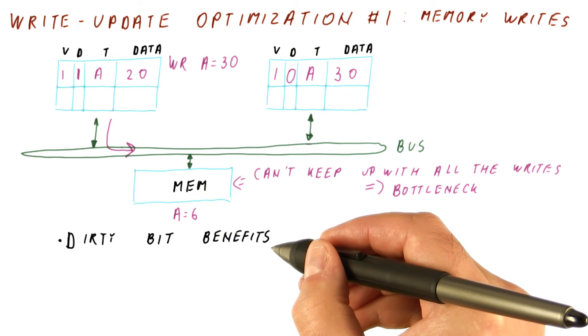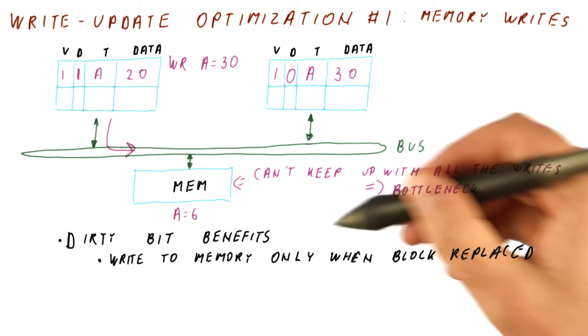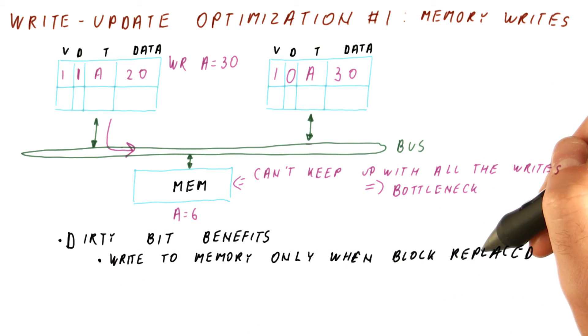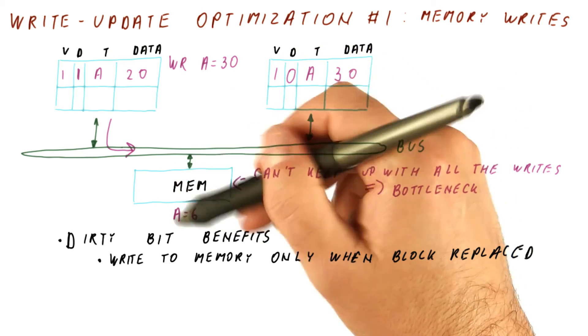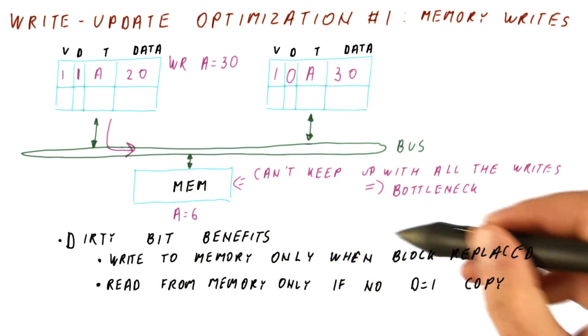So the benefits of having the dirty bit are that we can now write to the memory only when the block is replaced. So we can do many writes without updating the memory, thus saving a lot of the writes to memory.